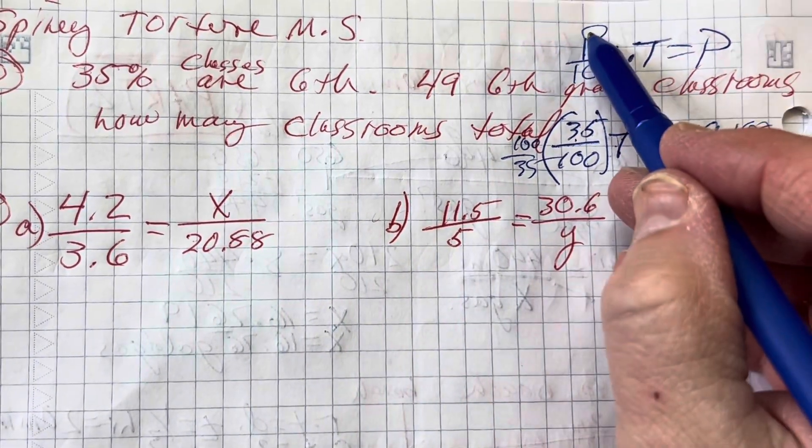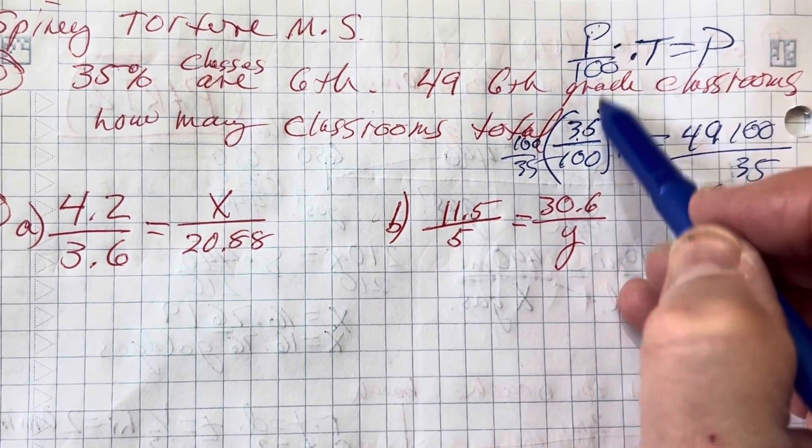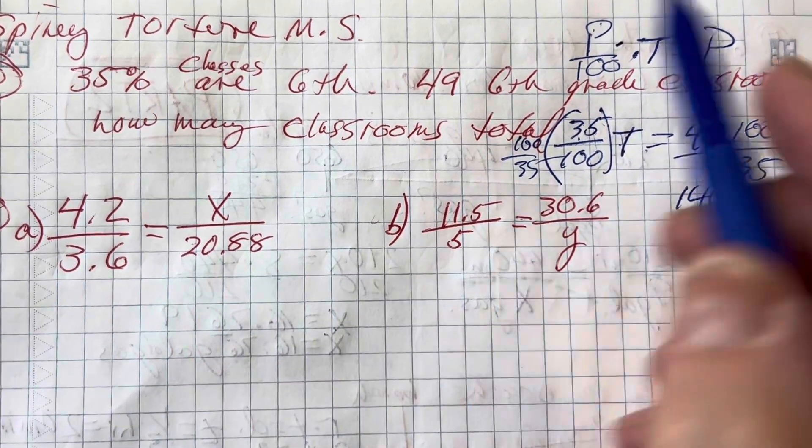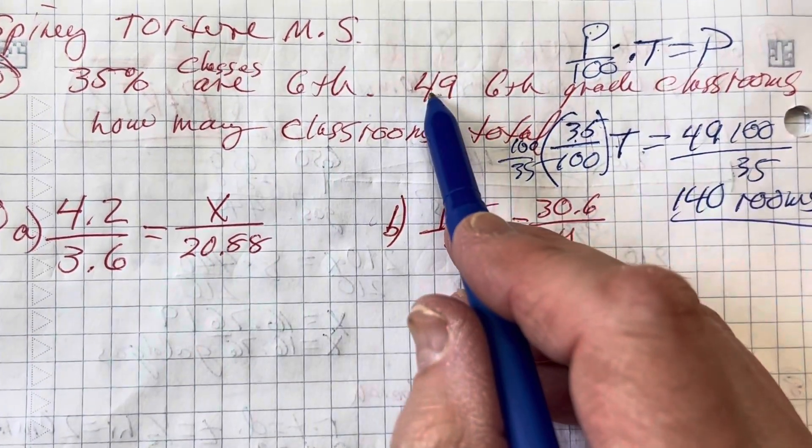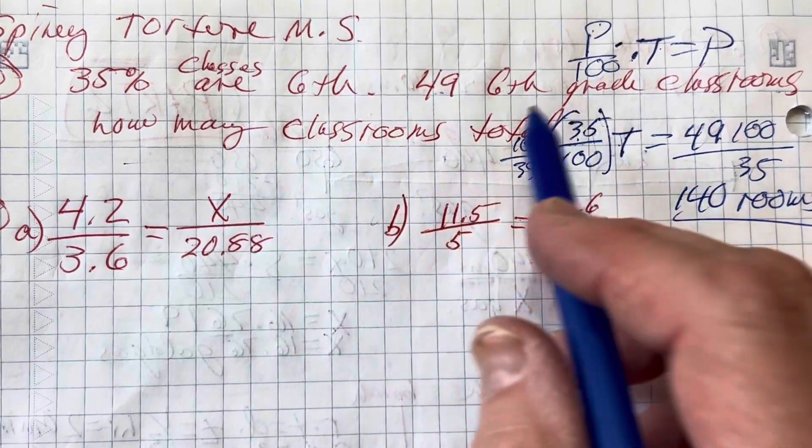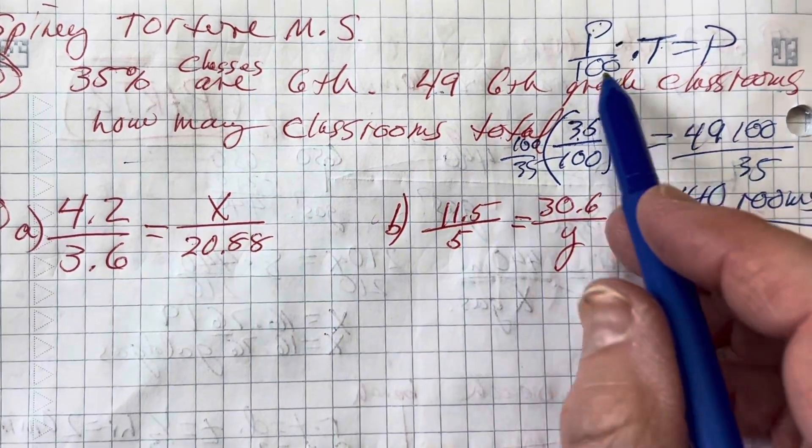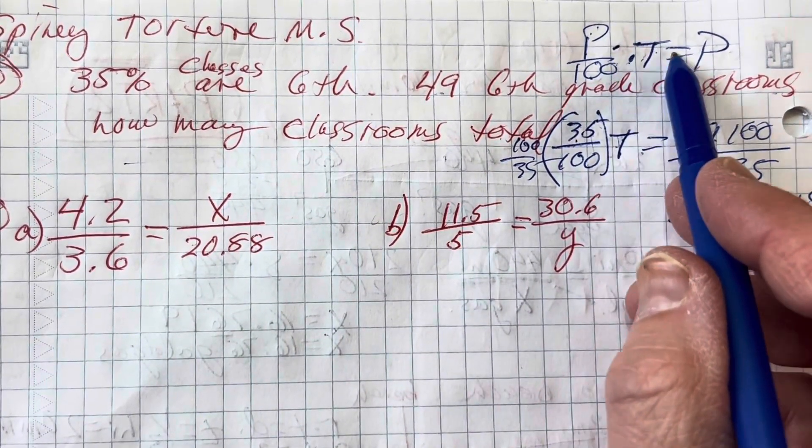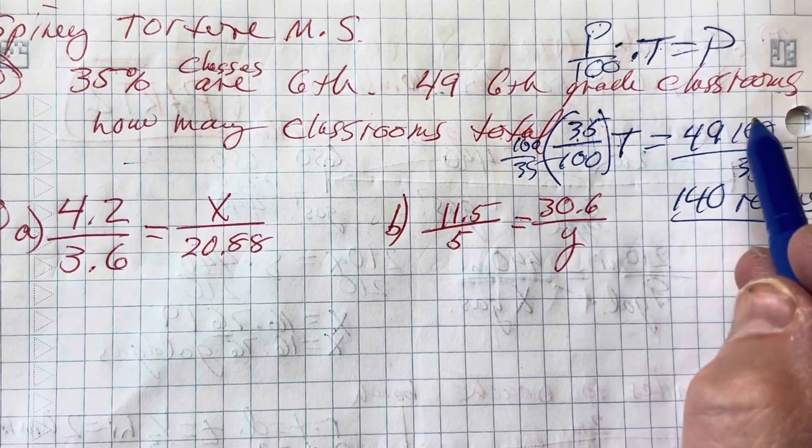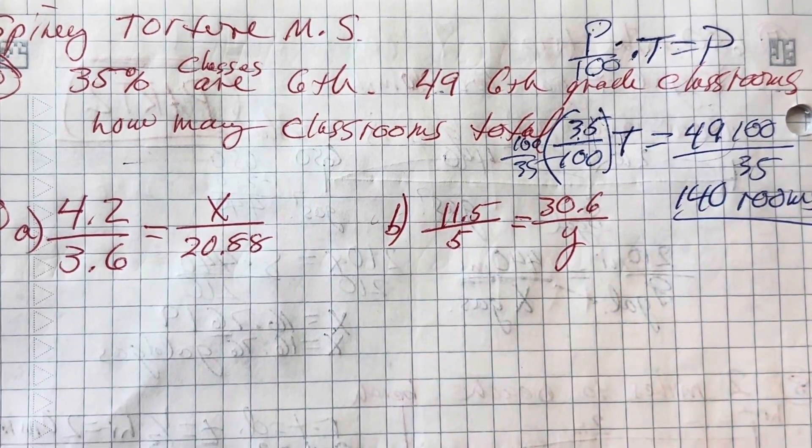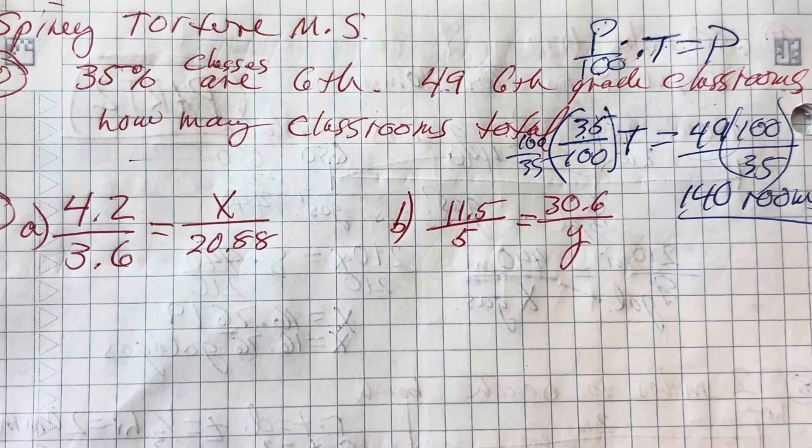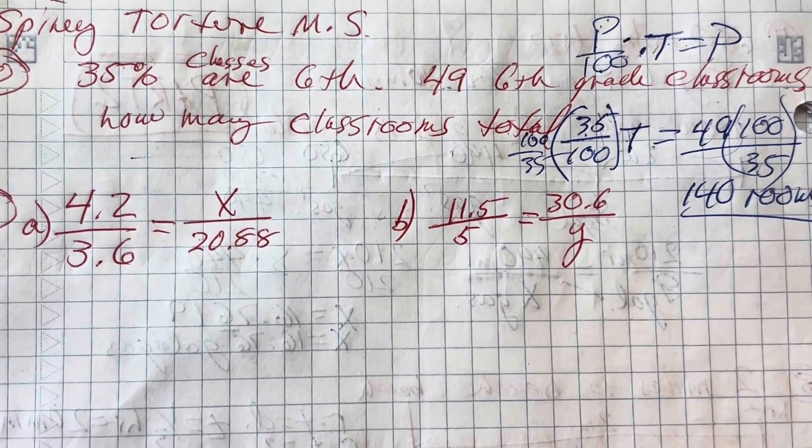This is my percent. But in this case, it's a fraction over 100. Percent over 100 times the total is the part. Instead of percentage, we're making it into a fraction here. Percent times the total. It asks us, 49 6th grade classrooms, how many classrooms total? Percent times the whole or times the total is the part. 35% is the part. Recognizes 49. When I do that math and set it up that way, I get 140 rooms.